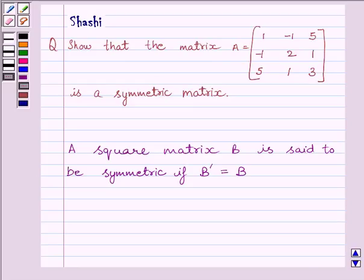First of all, let us understand the key idea to solve the given question. A square matrix B is said to be symmetric if B transpose is equal to B. That means the transpose of B is equal to itself. So this is the key idea to solve the given question.